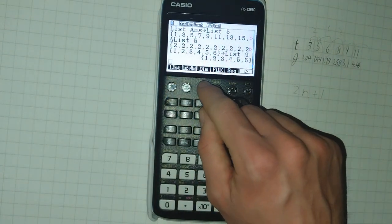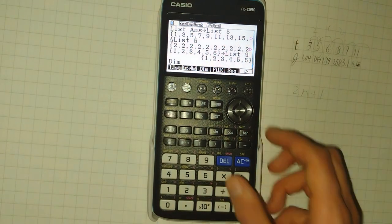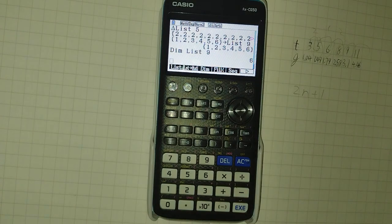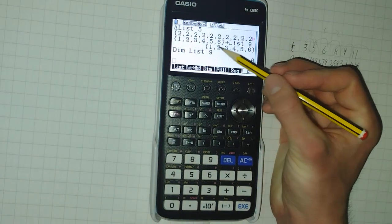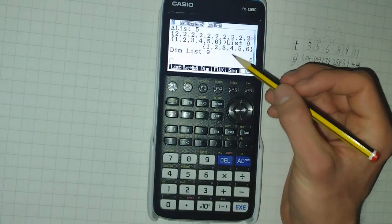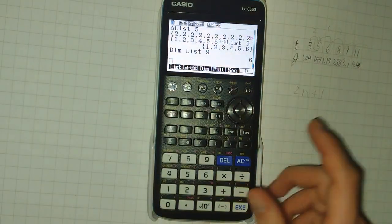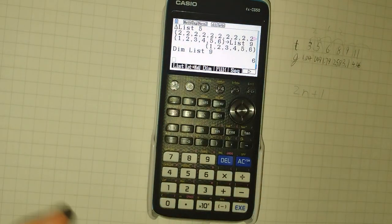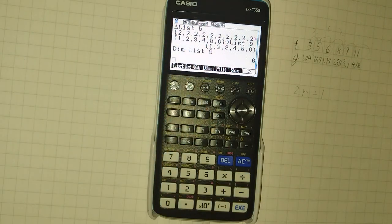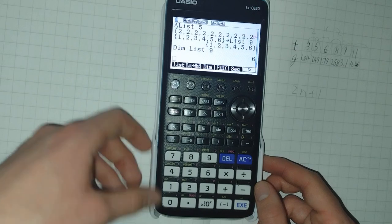Another way of creating lists is with the dim keyword. Now, at first glance, this doesn't seem like it'd be useful for creating lists. It simply tells you the number of items in a list. So one, two, three, four, five, six. That's what it returns. The dimension of list nine is six. But we can set the dimension of a list, just like setting any other variable.